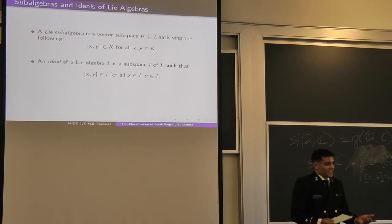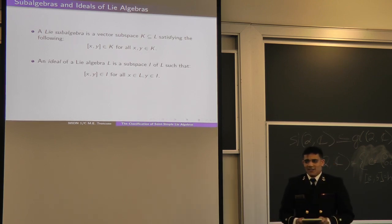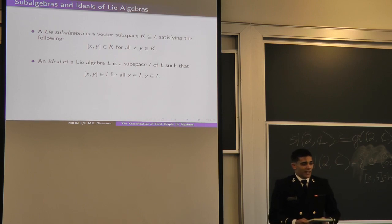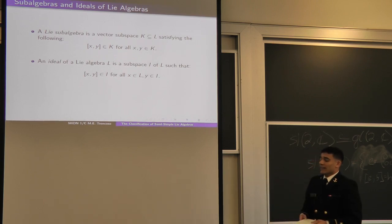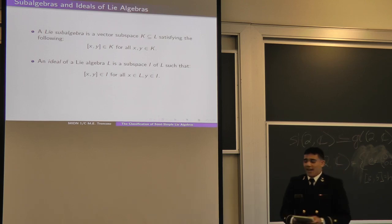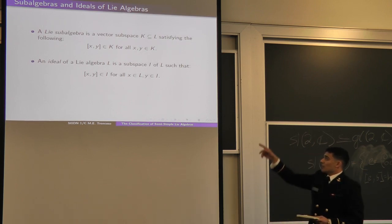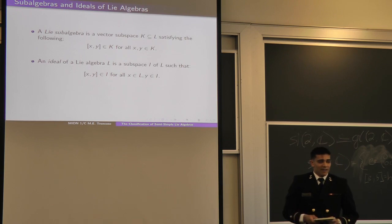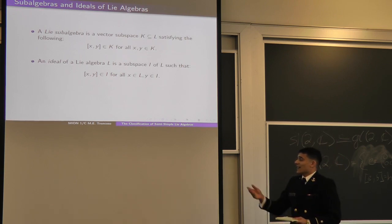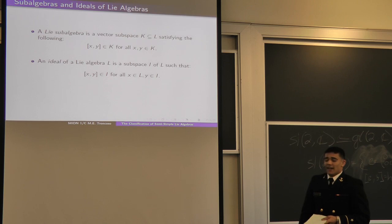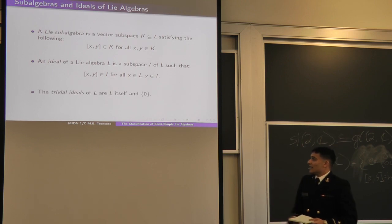Since a simple Lie algebra has no non-trivial ideals, it would be nice to know what an ideal is. A sub-algebra is a vector subspace K of L which is itself a Lie algebra and is closed under the Lie bracket. An ideal is a bit stronger — it is also a sub-algebra, so for any two elements in I you stay in I, but it also absorbs elements in L: the Lie bracket of any X in L with Y in ideal I stays in I. Our trivial ideals are zero and L itself, so a simple Lie algebra has only those.